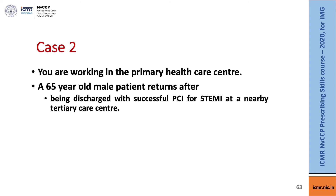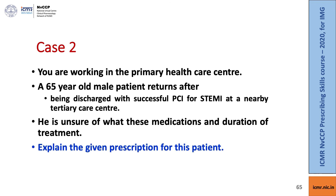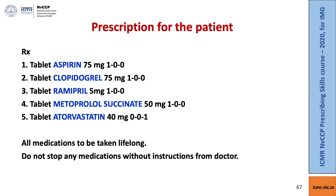Let's learn these things with case number two. You're working in a primary health care center. A 65-year-old male patient returns after being discharged with successful percutaneous intervention for ST elevation MI at a nearby tertiary care center. The patient is fine now, but he comes to you and is unsure of his list of medications — why he has to take it and how long. The prescription includes aspirin 75 mg, clopidogrel 75 mg, ramipril 5 mg, metoprolol 50 mg, and atorvastatin 40 mg. The first two tablets are antiplatelets, and for this patient dual antiplatelet therapy is recommended. We need to emphasize that all these medications are to be taken lifelong and not to stop any of these medications without specific instructions from a doctor.